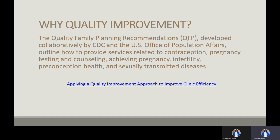Why quality improvement? According to the Quality Family Planning recommendations, developed collaboratively with CDC and the U.S. Office of Population Affairs, these outline how to provide services related to contraception, pregnancy testing and counseling, achieving pregnancy and fertility, preconception health, and sexually transmitted diseases. These recommendations are highly designed for use with patients who need services related to preventing or achieving pregnancy, based on a rigorous, systematic, transparent review of evidence with input from a broad range of clinical experts.